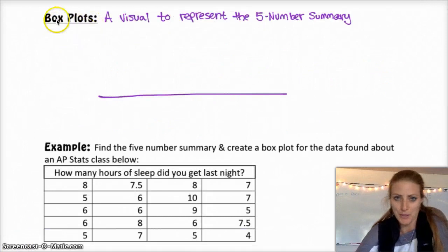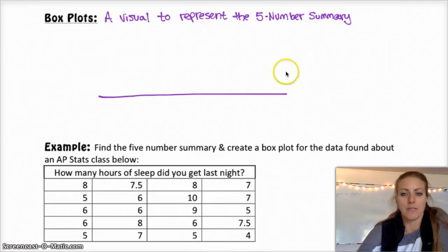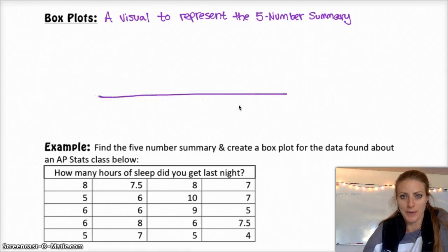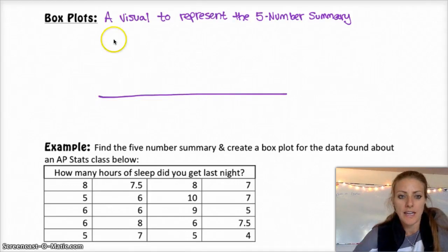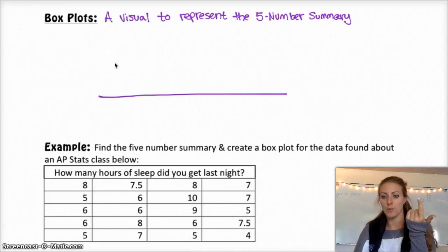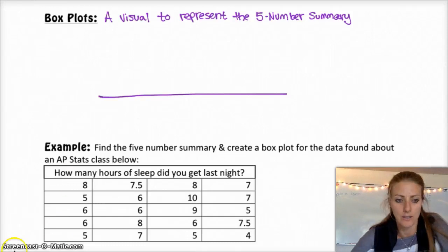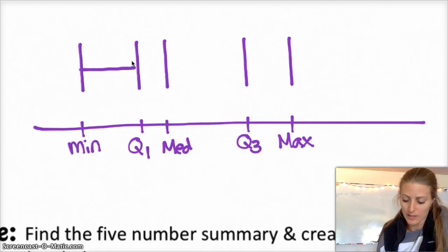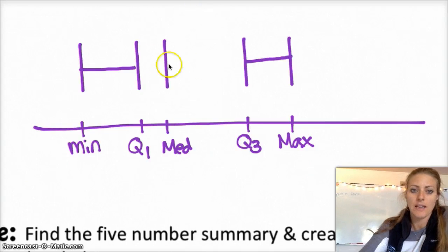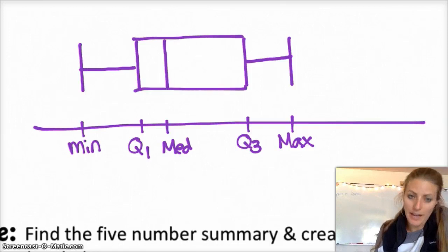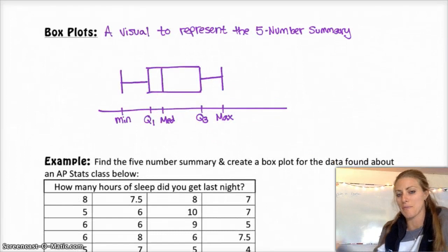A box plot, also sometimes known as a box and whisker plot, is just a visual way to represent the five-number summary. Basically, what you do is you have a number line that appropriately describes your data. You put, what I like to do is I like to put five vertical lines at the min, q1, the median, q3, and the max. And then from the minimum to q1, you draw a whisker or horizontal line. You do the same thing from q3 to the max. And then the inside, you make one big box between the three of those lines. And that would be a box plot or box and whisker plot.